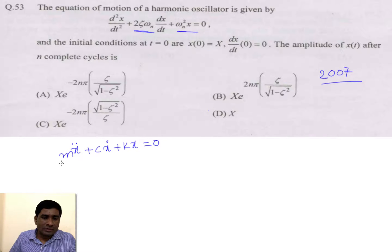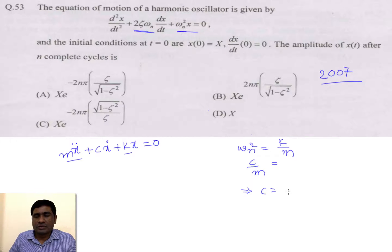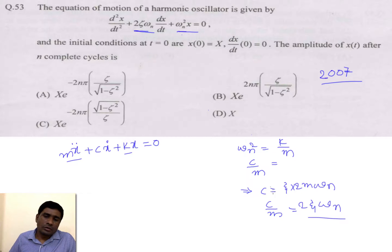Dividing by m and substituting standard symbols, the equation converts so that ωn² = k/m. For the damping term, c/m can be written as ξ × cc / m. Since cc = 2mωn, we get c/m = 2ξωn. Substituting these values gives the standard form of the damped vibration equation.